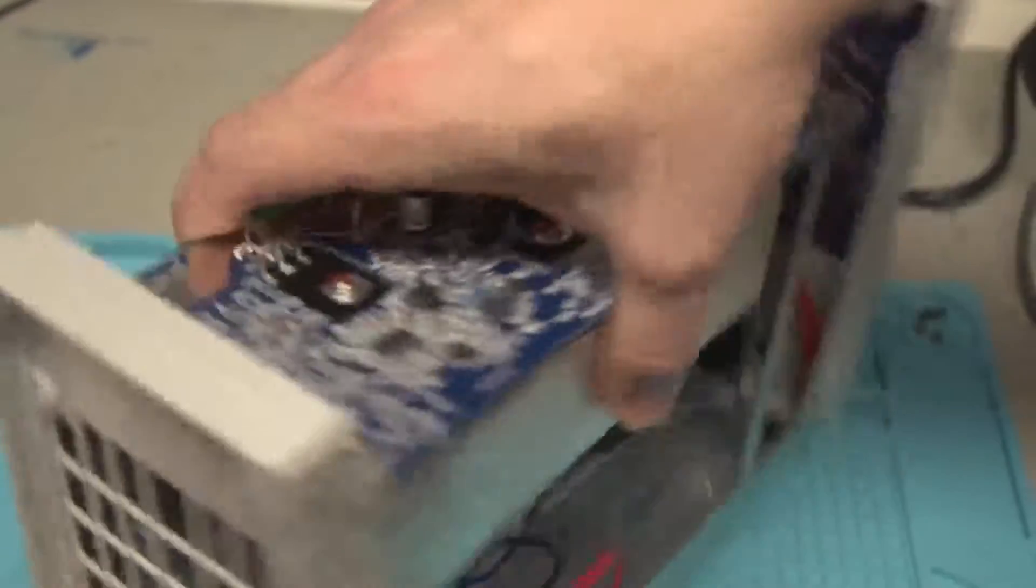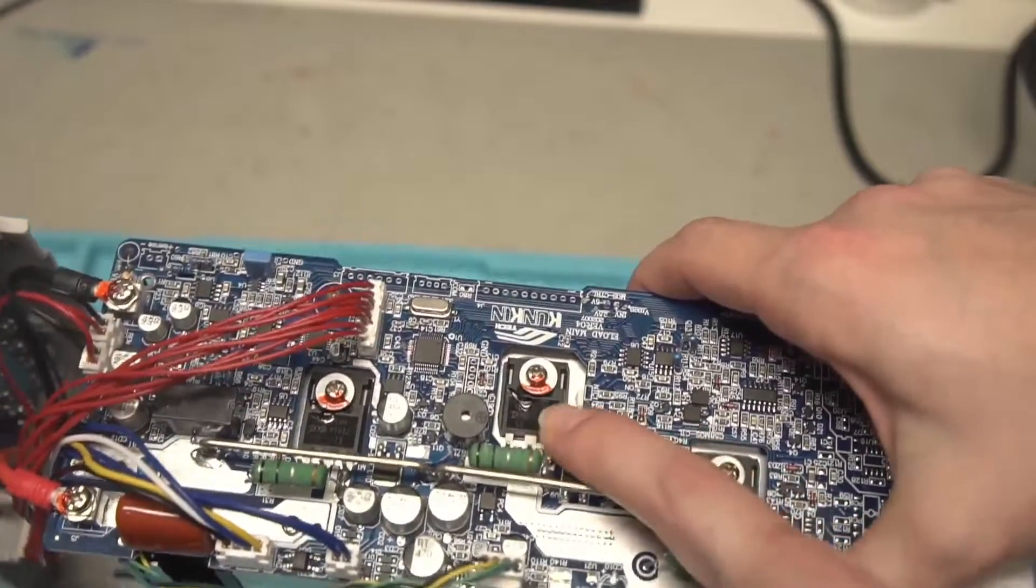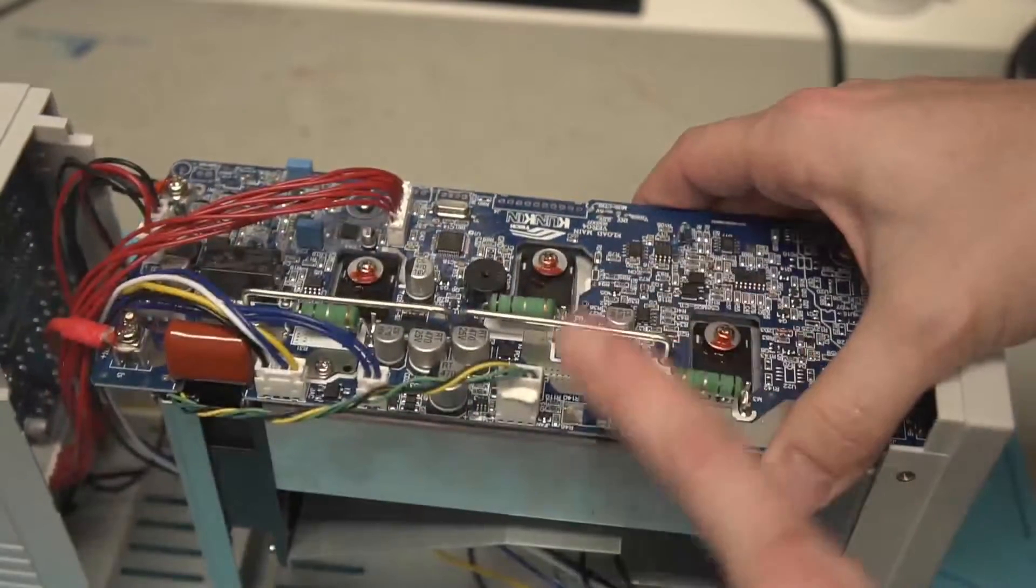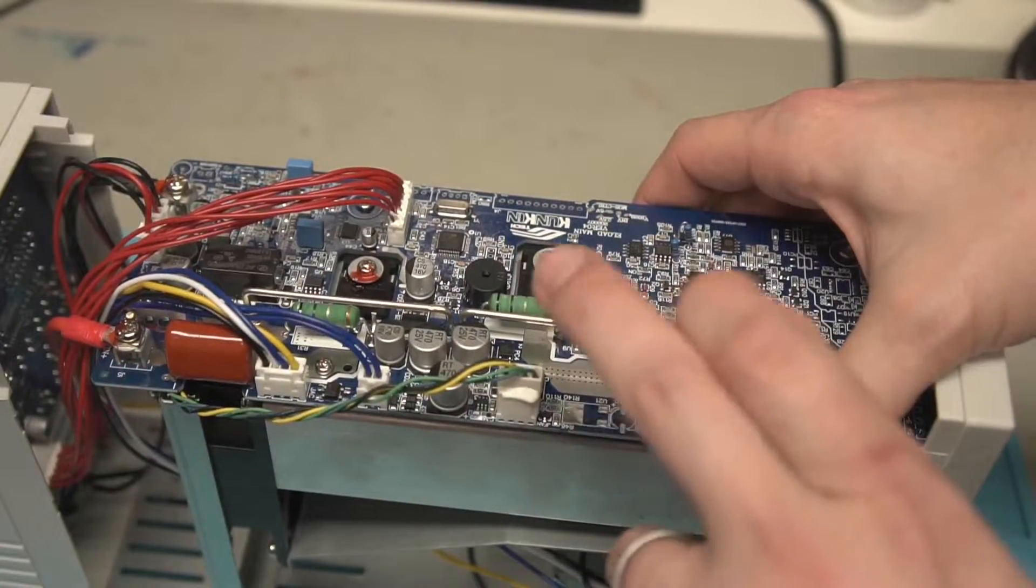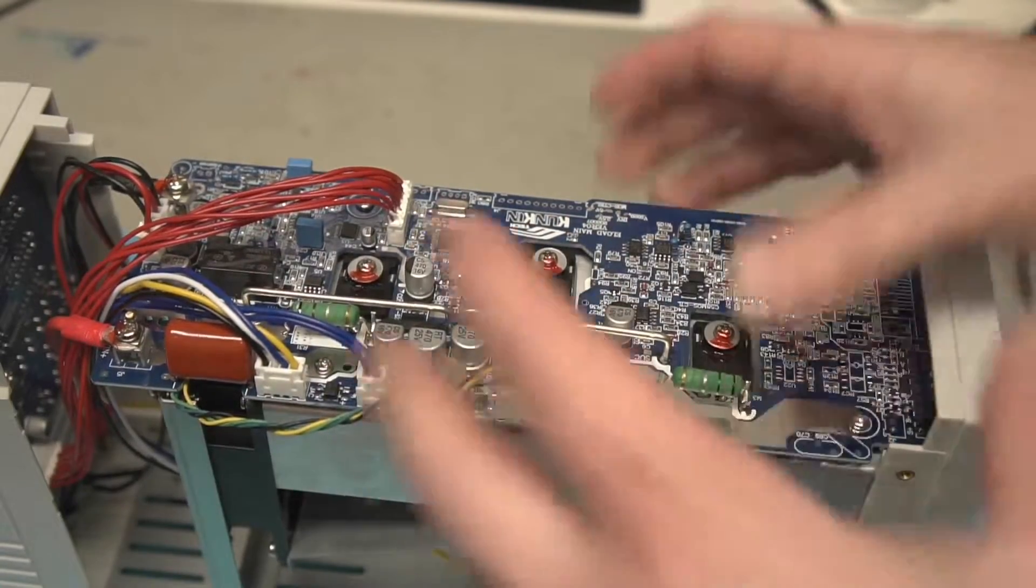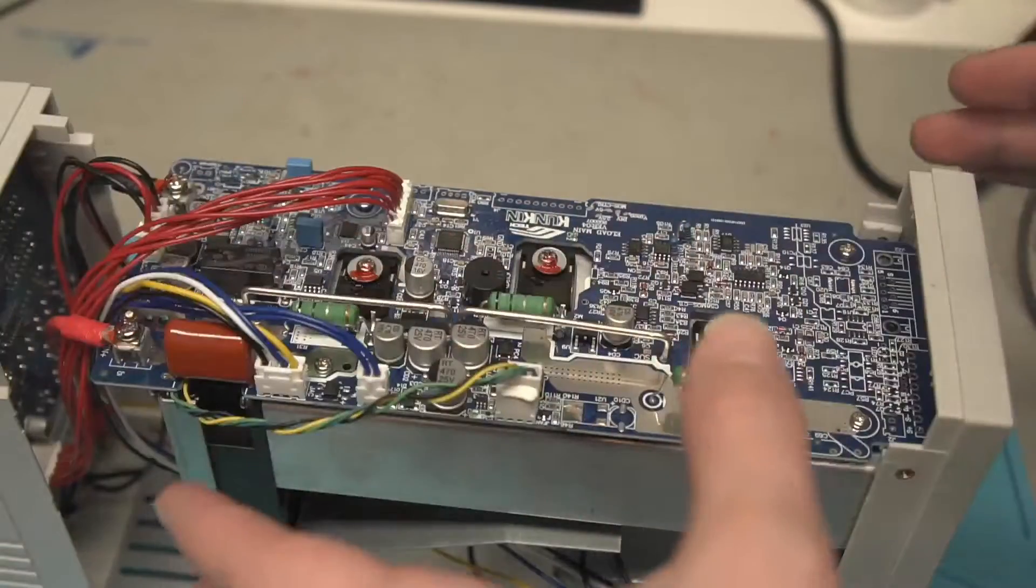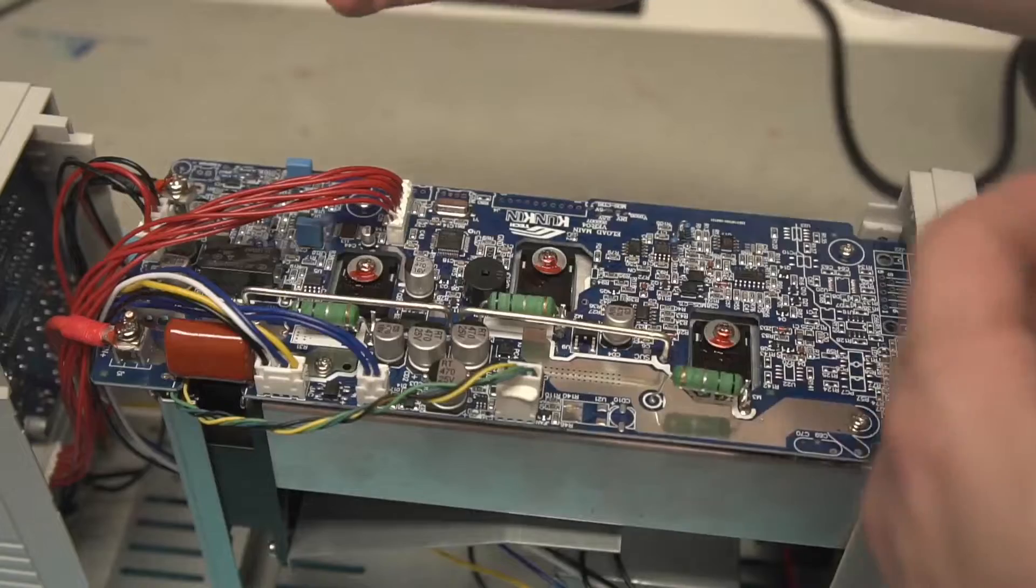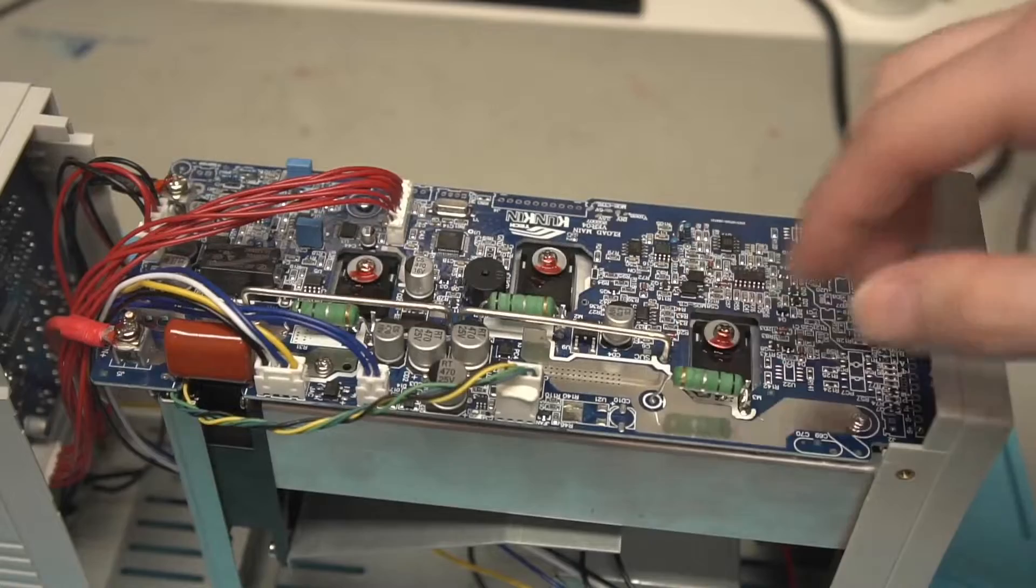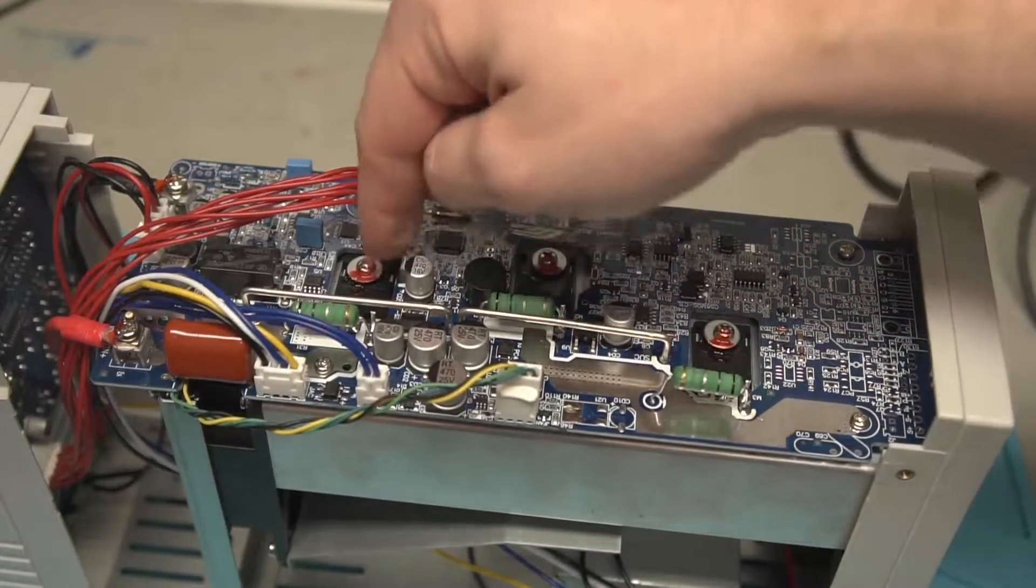So kind of the only thing that I find somewhat suspicious looking at them is we got international rectifiers from 2010 in a circuit board that was manufactured in 2020. So these may not be genuine FETs in there.